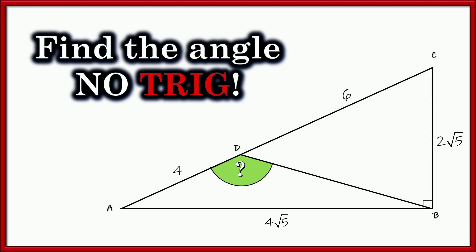Hello and welcome. I'm glad you're here. I've got a pretty fun one right here. We've got this right triangle with another angle in it, ADB, and the goal is to figure out what is the measure of that angle ADB. Can you find it without using trig?